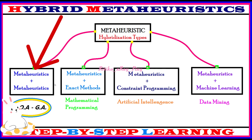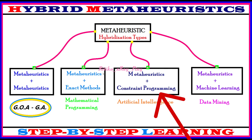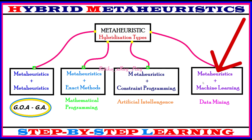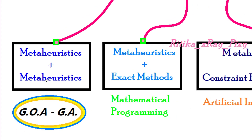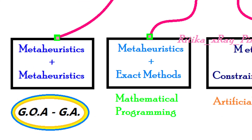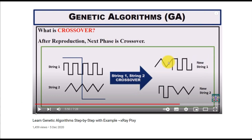There are different types of meta-heuristic combinations: we can combine meta-heuristics with other meta-heuristics, with exact methods, with artificial intelligence, or with machine learning and data mining techniques. In this video, we will combine two meta-heuristics — grasshopper optimization algorithm and genetic algorithm.